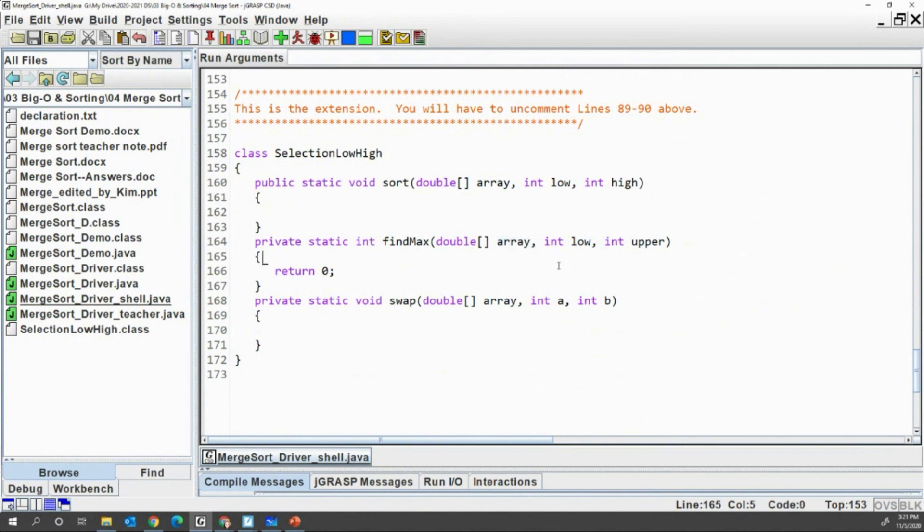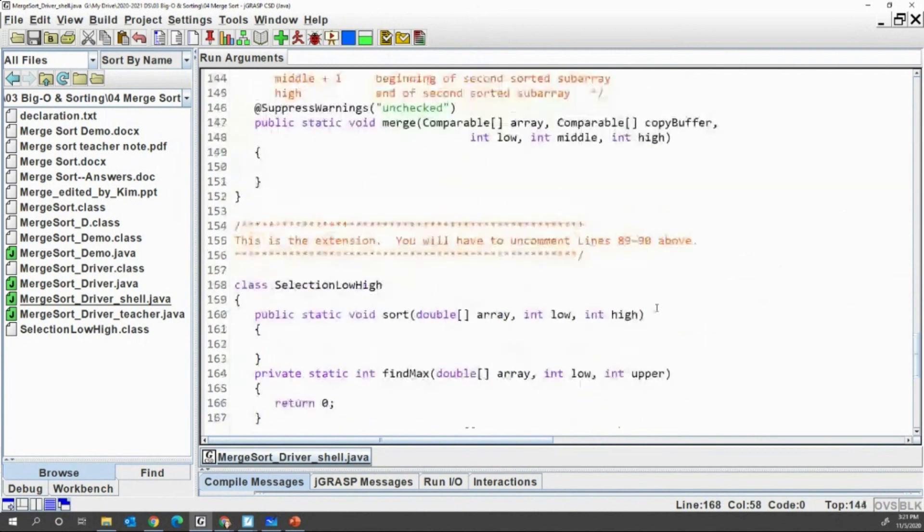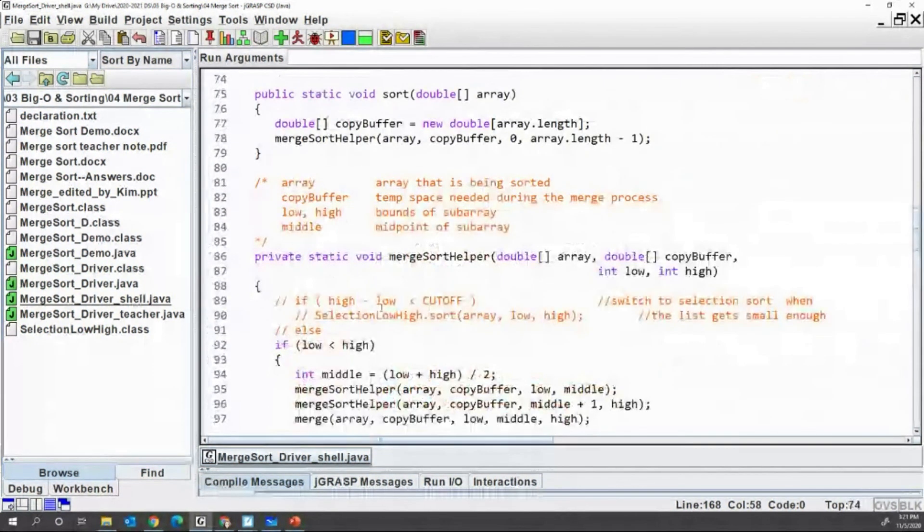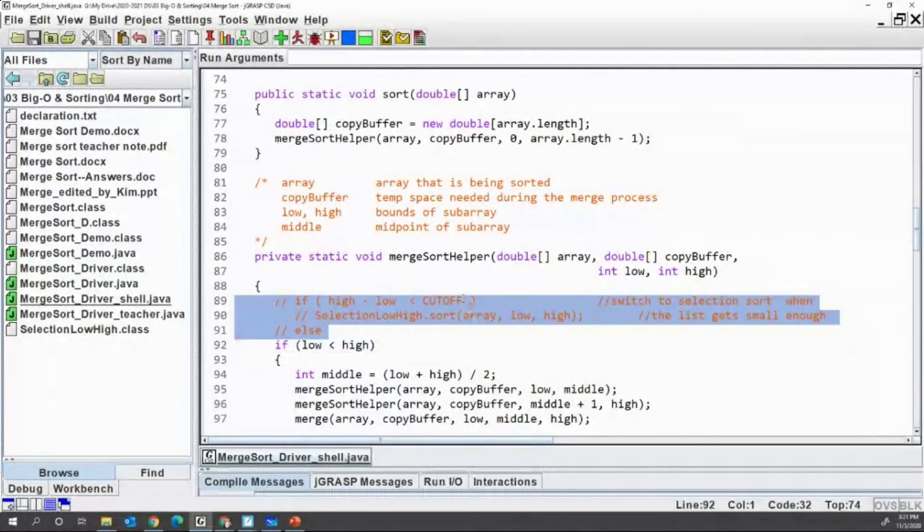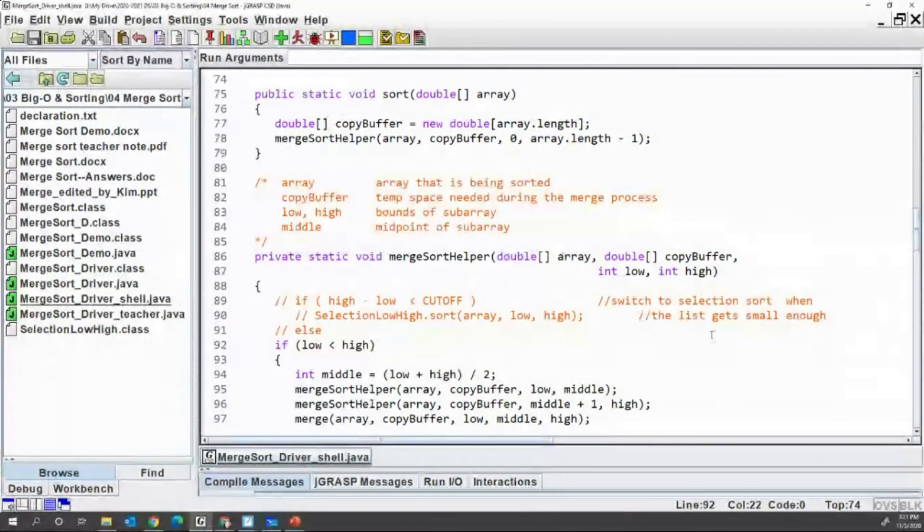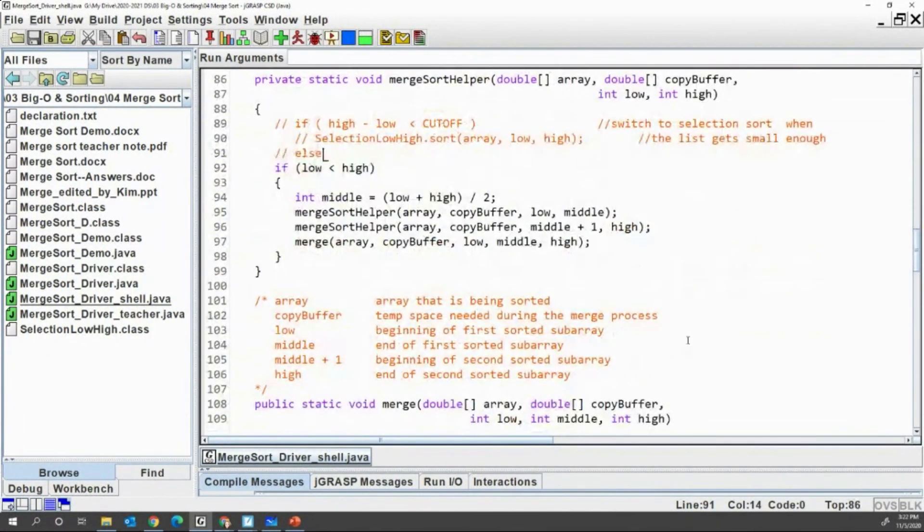That is the extension. Currently the code post is now ready for checking extension. So you are going to submit your extension to Google Classroom if you do that. If you do extension, you have to uncomment three more lines in the merge sort helper. If the size is less than cutoff, you are going to use selection low to high sort method instead of using merge sort. Because merge sort is usually good but for the small number of data, selection sort is better.